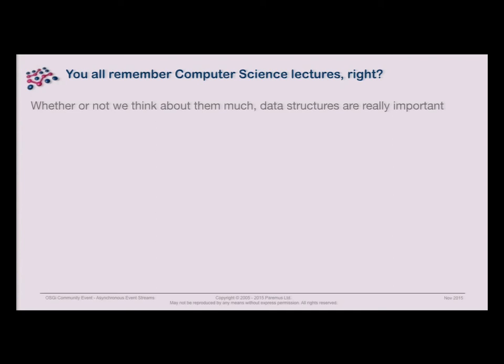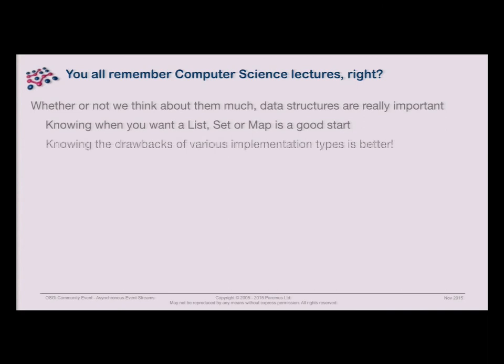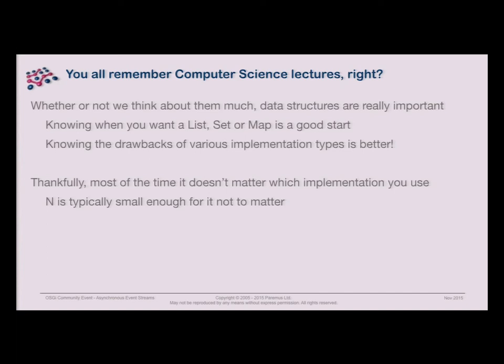We don't always like to say we've spent ages going through the order of how long something is going to take, but sometimes it does matter. Knowing when to use a list, a set, or a map matters. We tend to get it right because it's not always that hard, but you need to understand what the structures are doing. Thankfully, most of the time it matters a lot less than we were told, because n is typically very small. The reason people use ArrayList for everything in Java is that as long as you've got fewer than ten elements and never have to resize the array, ArrayList is faster than LinkedList even for random insertion.